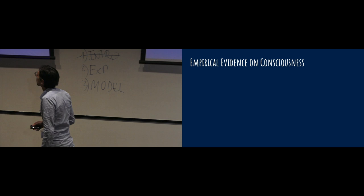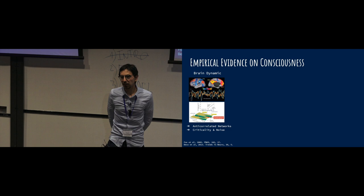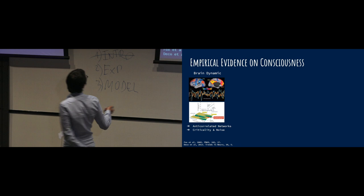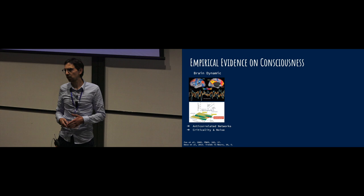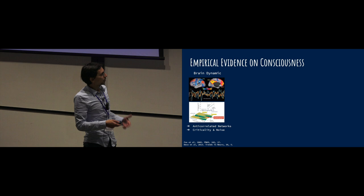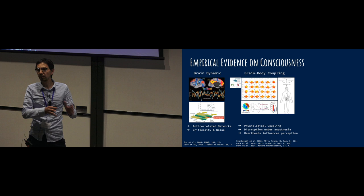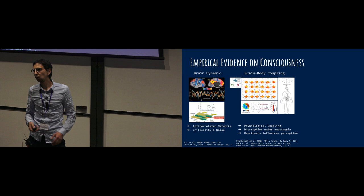Let's review some of them. For example, in the resting brain, you can find different anticorrelated networks. This anticorrelation of activity can be simulated with dynamical systems at the edge of criticality. You also need to add a bit of noise. Interestingly, this noise can be explained in part by the brain-body coupling or physiological coupling.